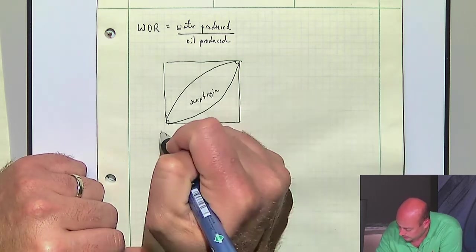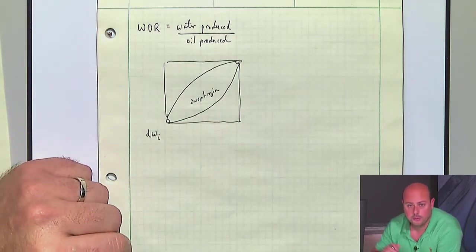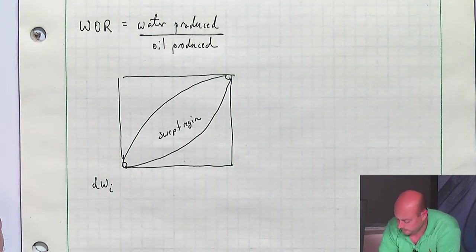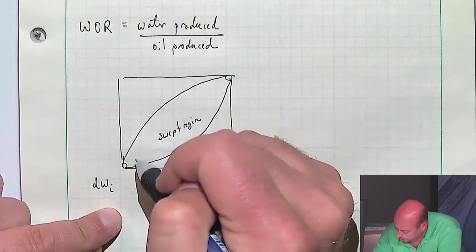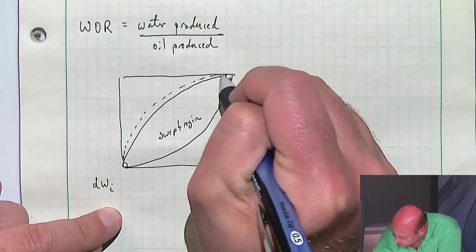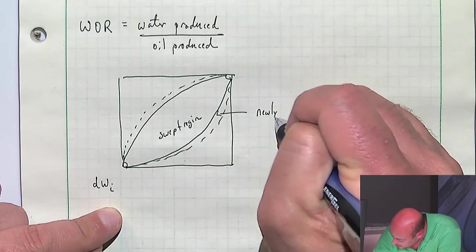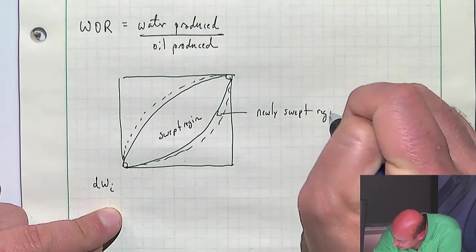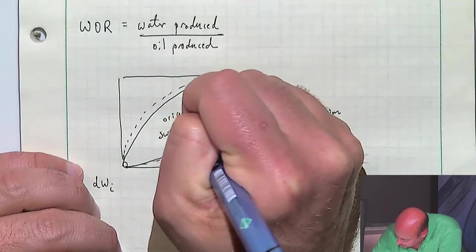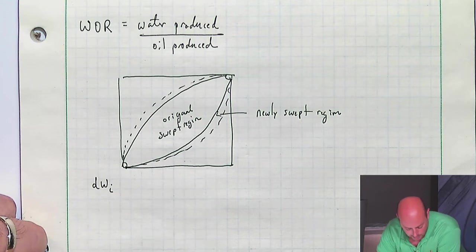If we wanted to see what would happen if we injected a little bit more water — an incremental amount of water I'll call DWI, think of it as one barrel of water — injecting that incremental amount is going to have an effect in the swept region, but it's also going to expand the swept region. I'll call this expanded region the newly swept region and the existing one the original swept region. Injecting a little bit more water expands that region by an incremental amount.